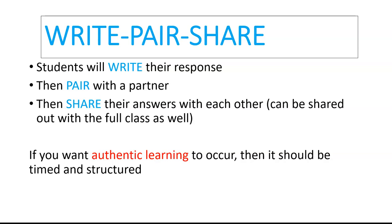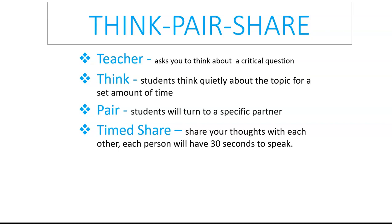Think, Pair, Share is similar to Write, Pair, Share, except students do not have to write. The teacher asks a critical question and gives students time to think quietly about the topic for a set amount of time. Students then pair with a specific partner — shoulder partner, face-to-face, or assigned — and it needs to be timed for authentic learning purposes.